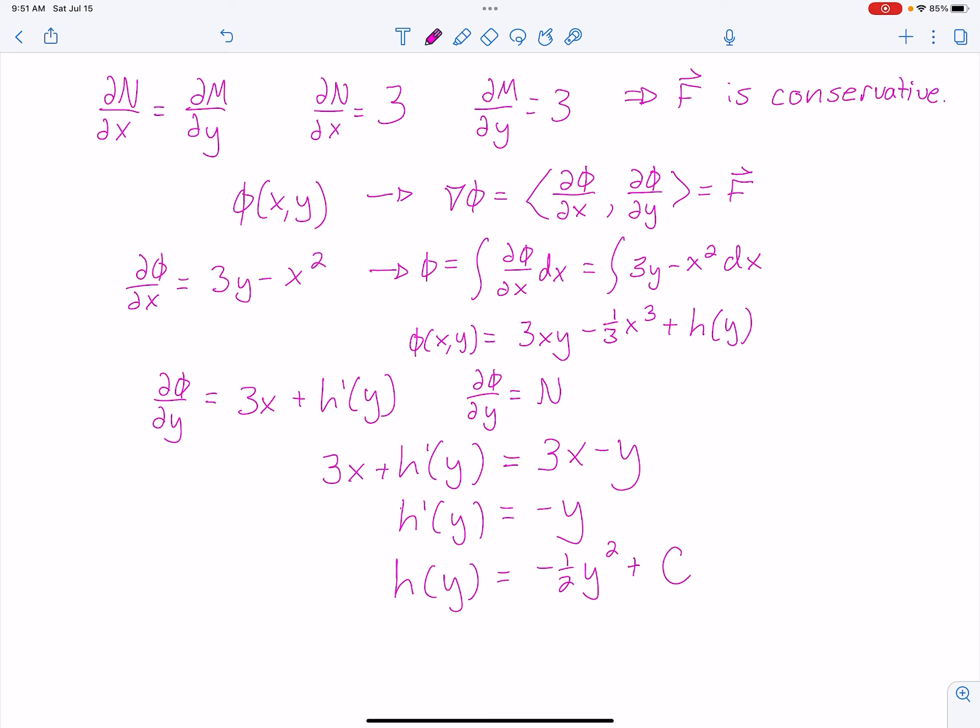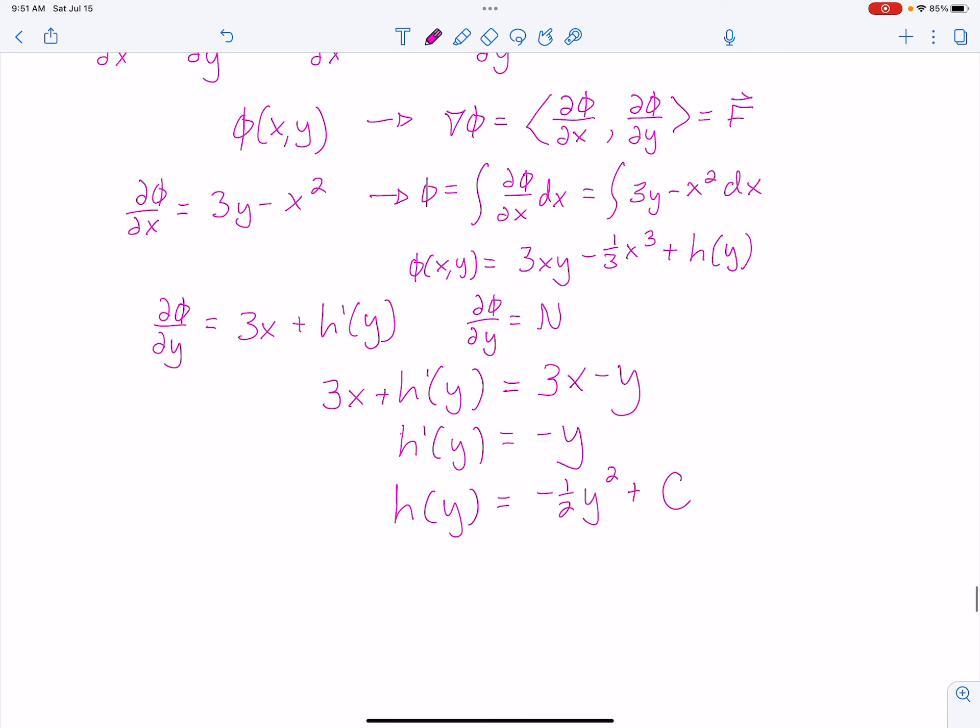If you need to write out your integral, please do. Most of the time, they are simple like that. Now I can actually write down my phi function. Phi of X, Y is equal to 3XY minus one-third X cubed plus H of Y. We just figured that out. Negative one-half Y squared plus C. There is my potential function.